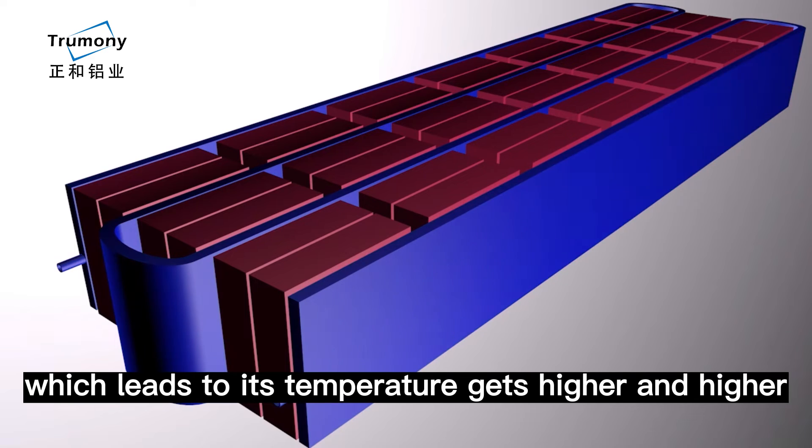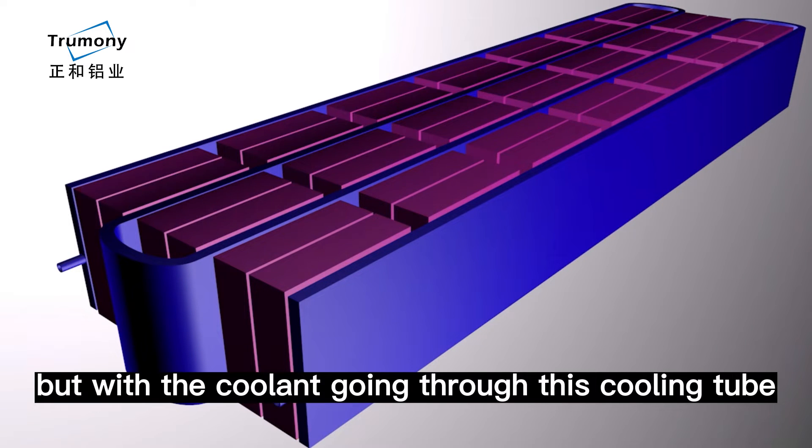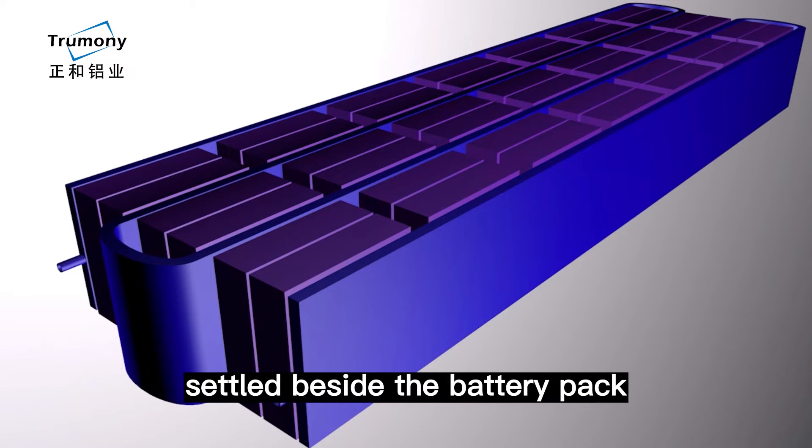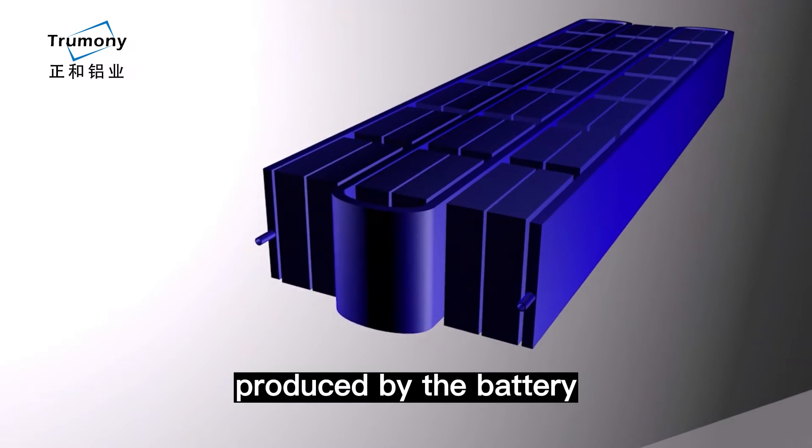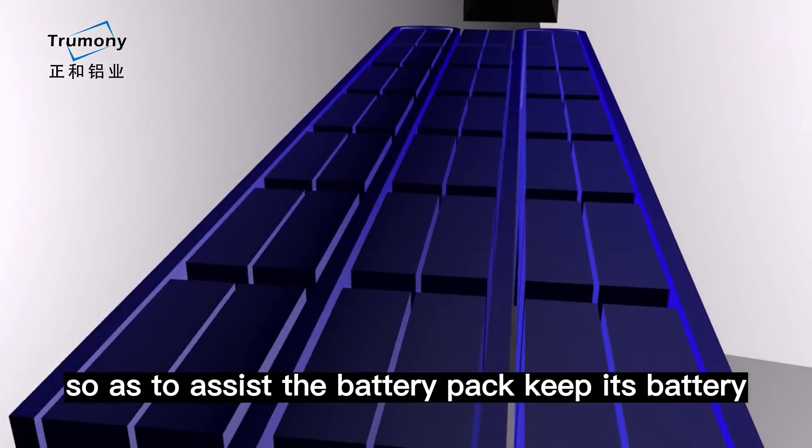But with the coolant going through this cooling tube settled beside the battery pack, the coolant will take away the heat produced by the battery so as to assist the battery pack keep its battery under an optimal temperature in case the battery gets too hot.